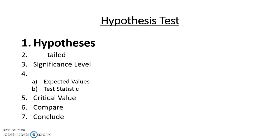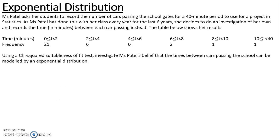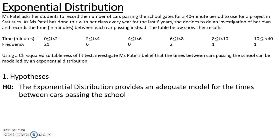Let's start by looking at our hypotheses. Our null hypothesis is that nothing has changed, nothing is different, everything stays the same. So our null hypothesis is that the exponential distribution provides an adequate model for the times between cars passing the school.